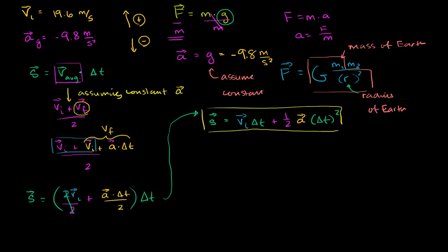What I want to do in this video, now that we have displacement as a function of time given constant acceleration and initial velocity, is to plot displacement, final velocity, and acceleration — all of those as functions of time. Just so that we really understand what's happening as the ball is going up and then down.